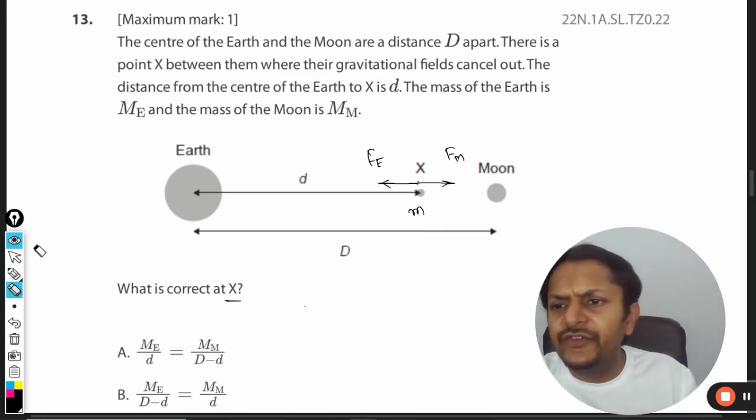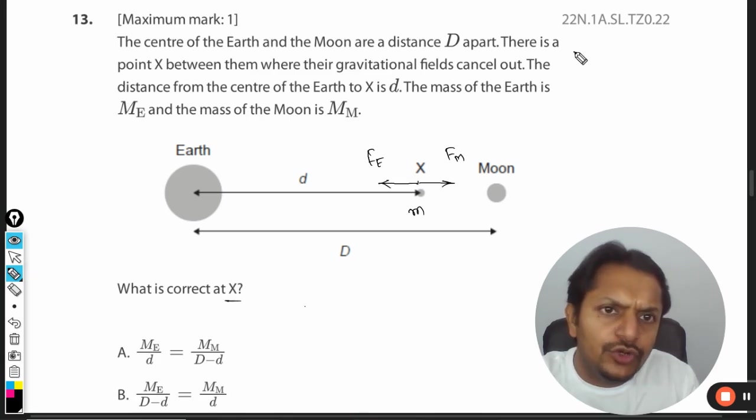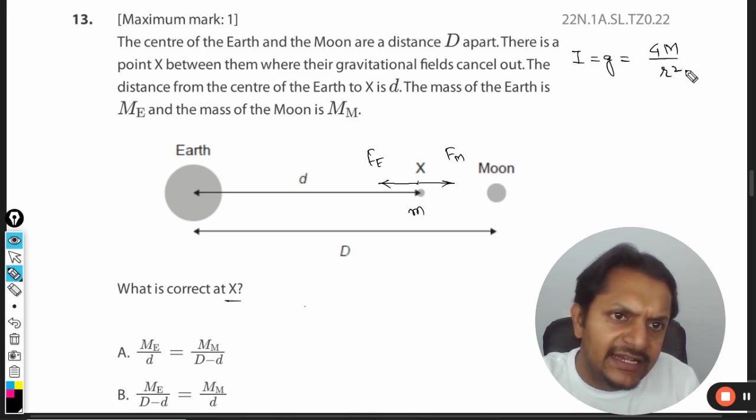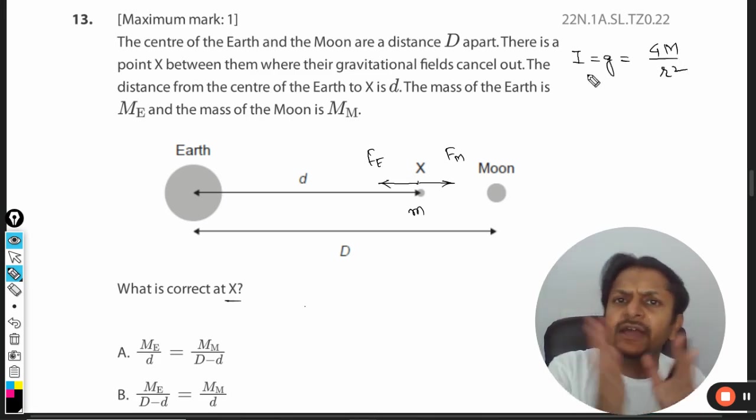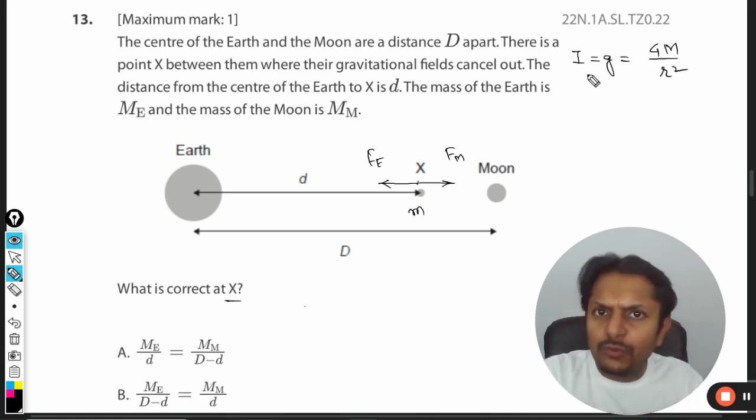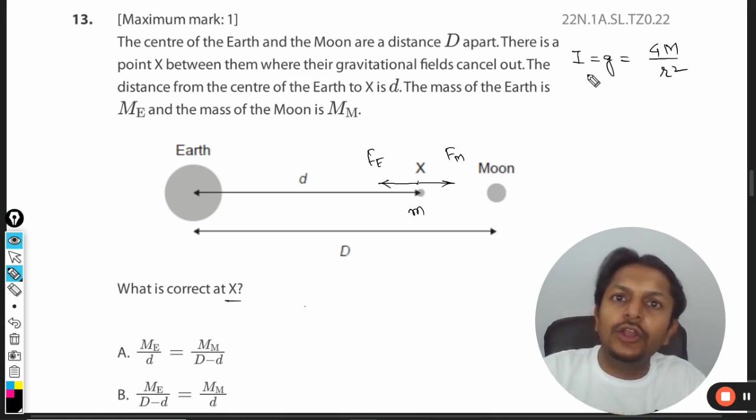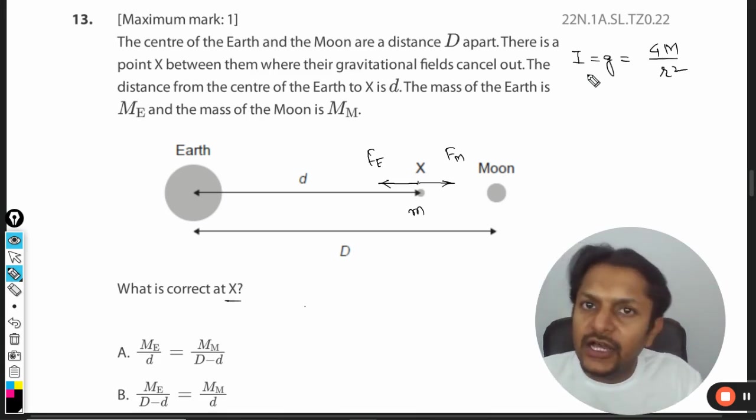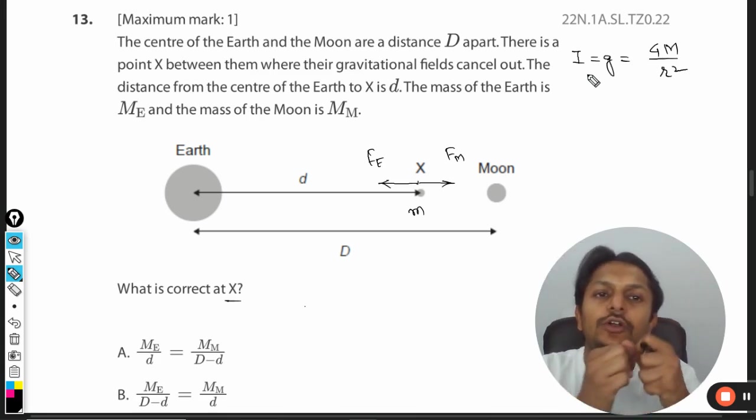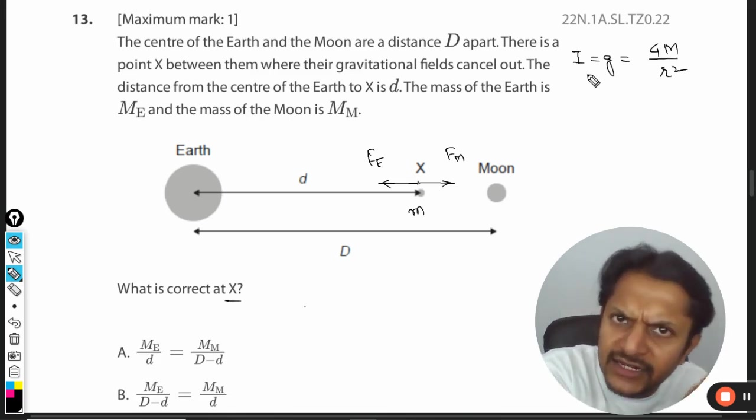If you say that there is no mass at that point, we can work in gravitational field strength also. You can write it as g. The formula for that is GM by r squared. If you are using small m along with it, it becomes force. If you want to call it gravitational field intensity or the strength, you can solve this question.